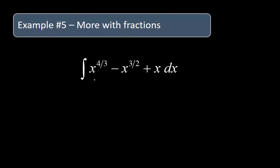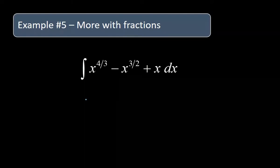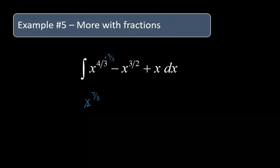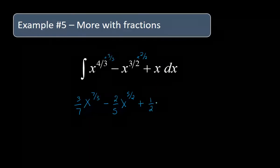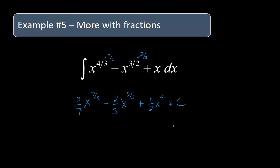So some more with fractions, just to practice. We're going to increase the power by one, so that's plus three thirds, giving us seven thirds. Dividing by seven thirds is the same as multiplying by three sevenths. Then increase the power by one — that's two over two — so x to the five halves, dividing by five halves is multiplying by two fifths. And then finally, this is just x, so it's going to be x squared over two — one half x squared — and then plus C.